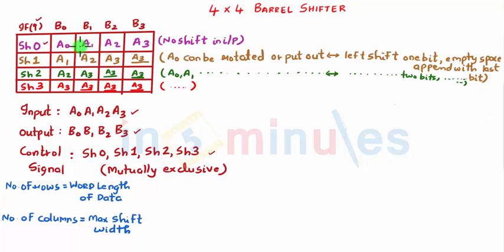If Shift 1 is high this shifts left by 1. A0 is discarded, A1 comes towards the left, A2 comes towards the left, A3 comes towards the left, and this is the last bit which is present so I'm just appending that bit for B3 as well.